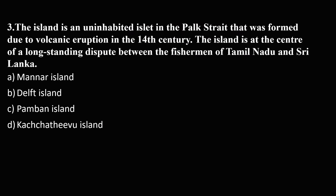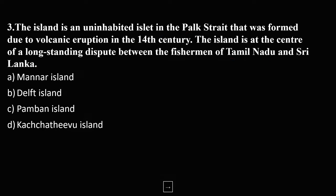The third question: This island is an uninhabited islet in the Palk Strait that was formed due to a volcanic eruption in the 14th century. The island is at the center of a long-standing dispute between the fishermen of Tamil Nadu and Sri Lanka. Which is this island? The options Mannar Island, Delft Island, and Pamban Island are all incorrect. The answer is Kachativu Island. This topic is in the news and you can expect a question on Kachativu Island. This is a unique paragraph-style question where UPSC gives a description and asks you to identify the location.